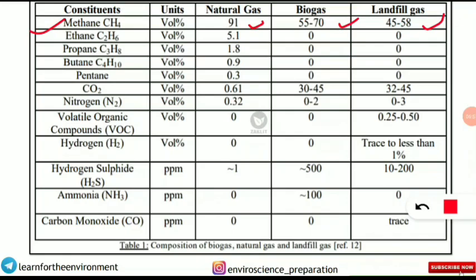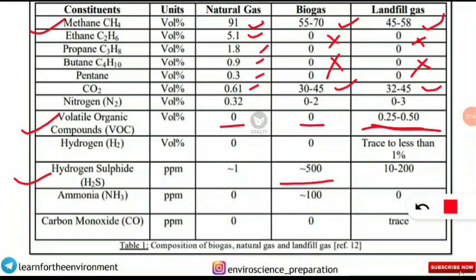Ethane, propane, butane, and pentane are found in natural gas only — not in biogas or landfill gas. Carbon dioxide is present at maximum levels in biogas and landfill gases but at very low amounts in natural gas. Volatile organic compounds (VOCs), which are very harmful, are present in landfill gases but are essentially zero in natural gas and biogas.